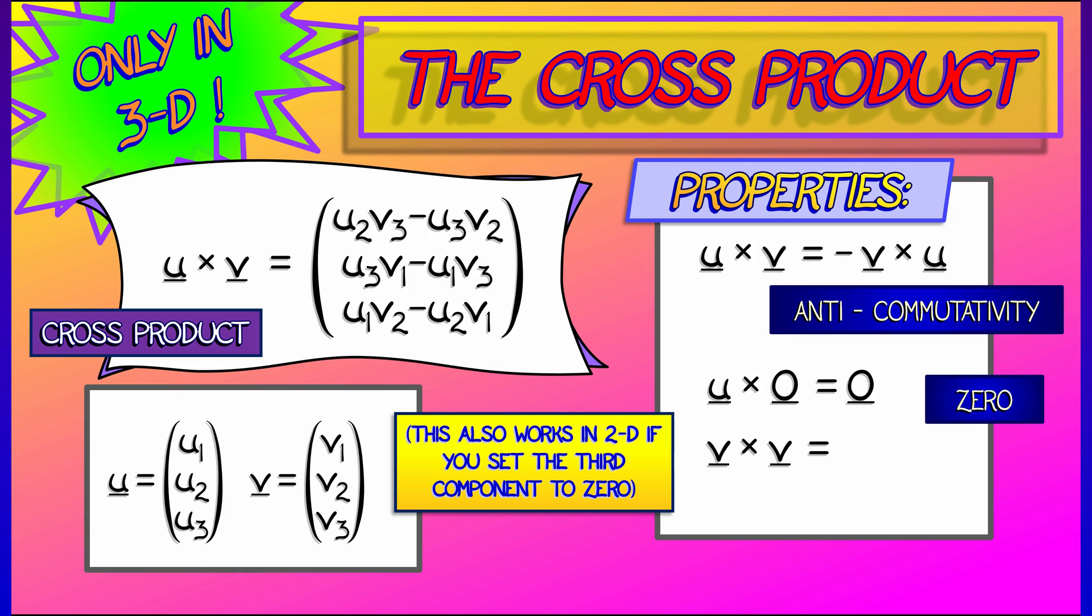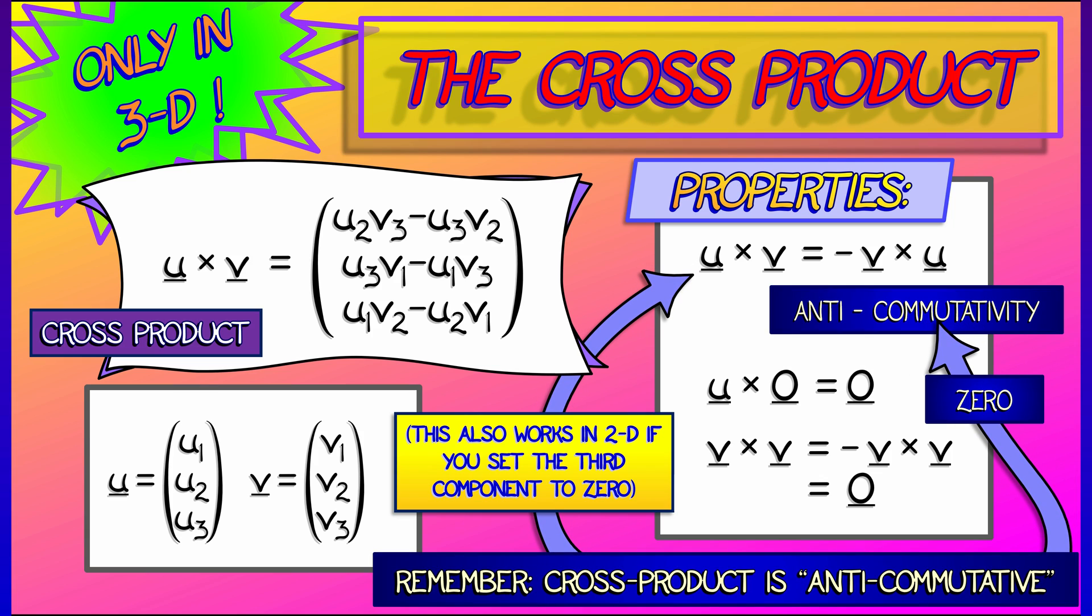And lastly, if I take the cross-product of a vector with itself, I get, well, by anti-commutativity, I get minus that vector. And the only vector that is equal to its minus is zero. Okay. Now, again, the most important of these properties is anti-commutativity.